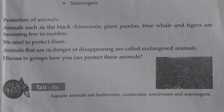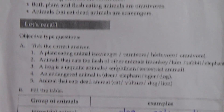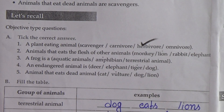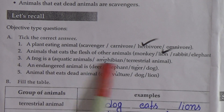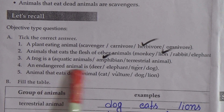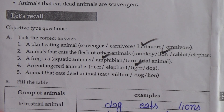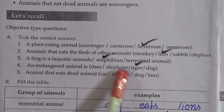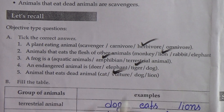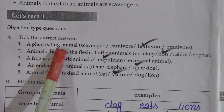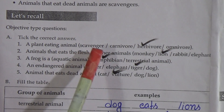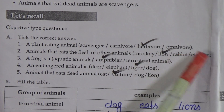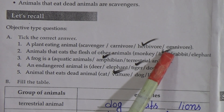Now let's complete our exercise. Exercise number A: tick the correct answer. A plant-eating animal is called a herbivore. Animals that eat the flesh of other animals — the correct answer is lion. An endangered animal is tiger. An animal that eats dead animals — the correct answer is vulture, so tick vulture.